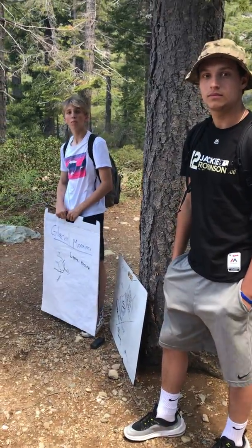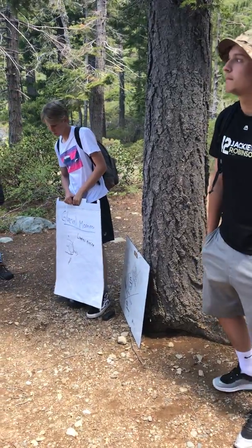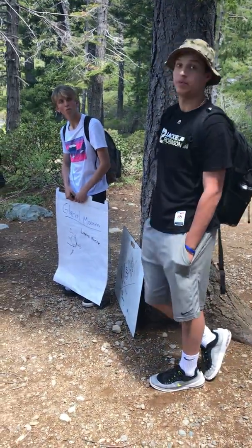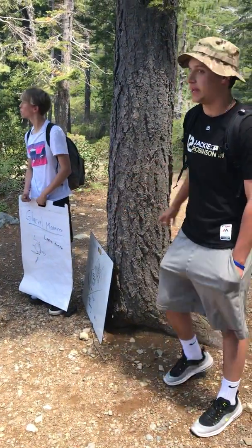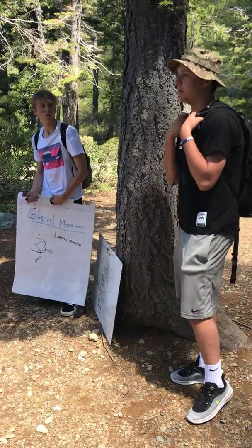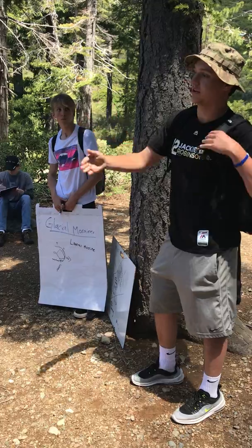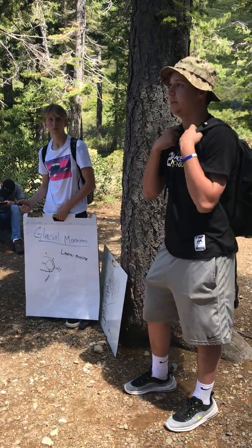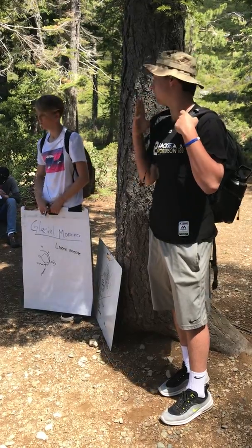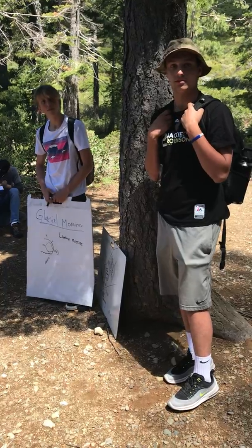How would you recognize a moraine from a road cut or something? What would you see in there? You'd see lots of different kinds of rocks, because the glacier is just moving across land grabbing whatever it can — trees, rocks — it doesn't care what kind of rock it is. It's scraping stuff up. Glaciers, when they move, are very powerful, so you'll see different sediments of rocks, round rocks.